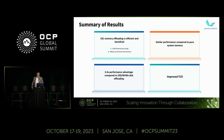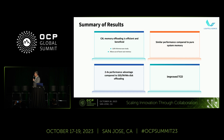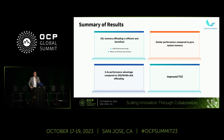In summary, CXL memory is efficient and beneficial for large language model offloading. There's similar performance compared to system memory, a 2.4x advantage over disk, and an improved TCO — we calculated approximately a 2x improvement in TCO.